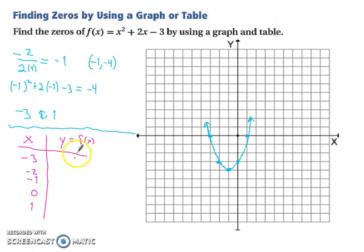Well our vertex was at negative 1, negative 4. You can also plug each of these values in. So if we plug in negative 3, we end up with 0. If we plug in negative 2, we end up with negative 3, 0, negative 3, and 1 is 0. And if you notice, we still have our 0 values being negative 3 and 1.